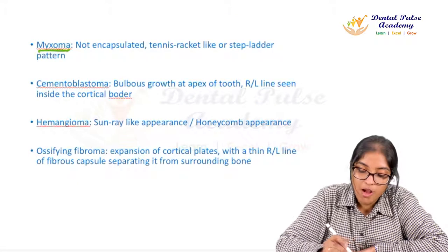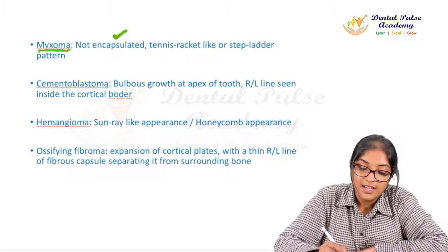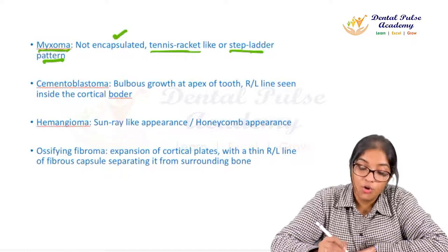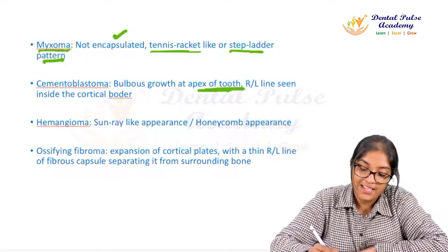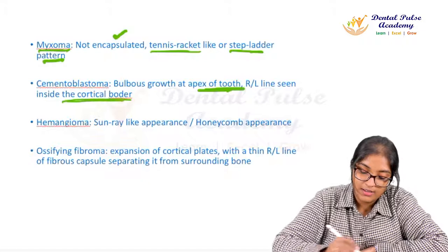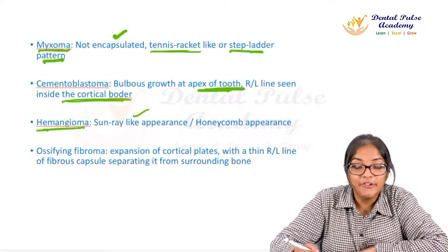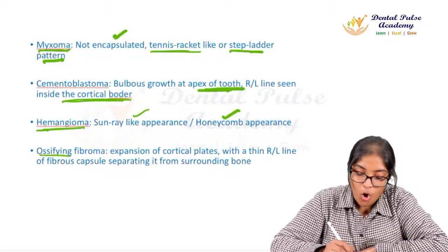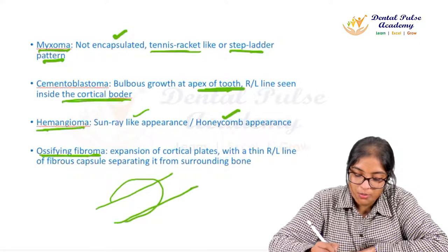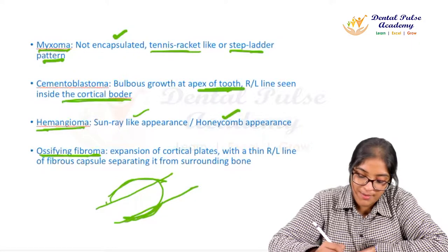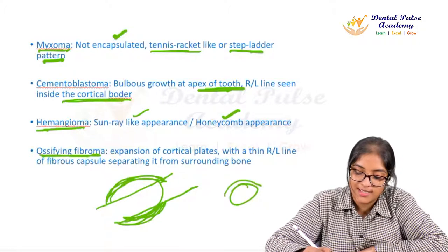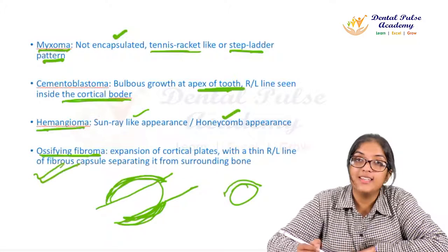Other tumor types: myxoma is a non-encapsulated lesion with a tennis racket or step-ladder pattern. Cementoblastoma appears as a radio-opaque bulbous growth at the apex of a tooth with a surrounding radiolucent line at the cortical border. Hemangioma is most commonly seen with a sunray or honeycomb appearance. Ossifying fibroma shows expansion of cortical plates with a central radiopacity surrounded by a radiolucent line — very characteristic.